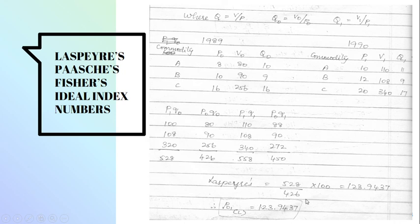Moving on to the formula, 528 by 426 into 100 which gives you the Laspier's index number 123.9437. So this is the index number using the Laspier's method.